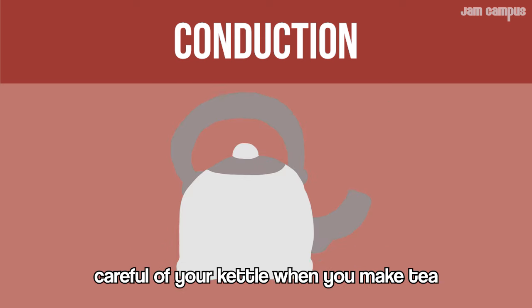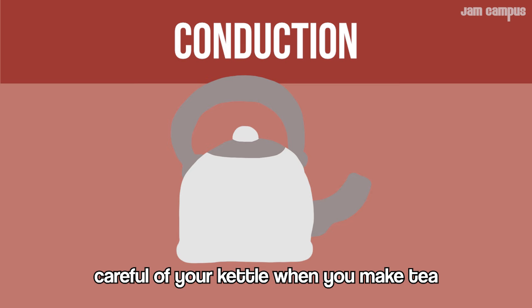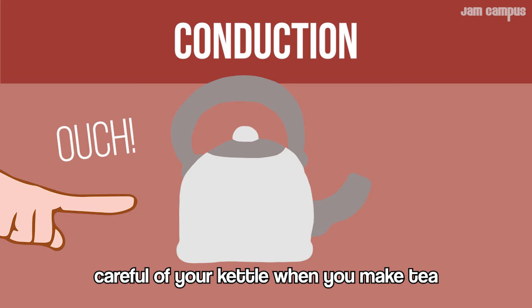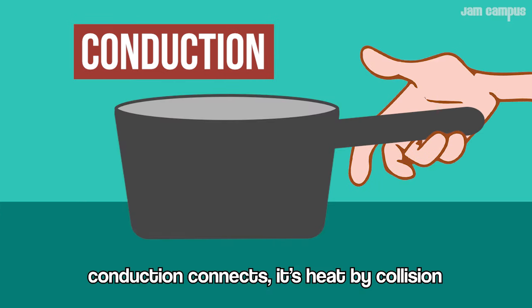Warm molecules move fast with energy; cold ones move slow until they're matching. Good conductors like metal transfer heat more rapidly — feel the handle of your kettle when you make tea.